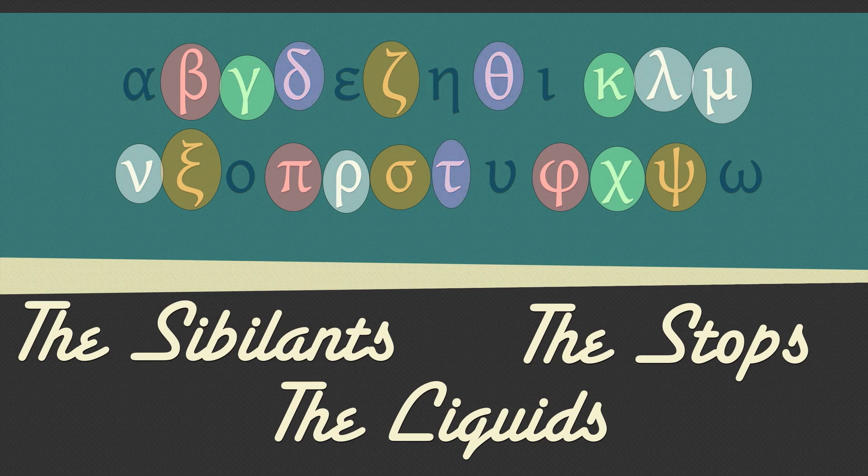The letter we need to really understand is the sigma. I call it the sinister sigma. And there are two copycats. They're not quite as sinister as the sigma, but they try to be. Theta and kappa.